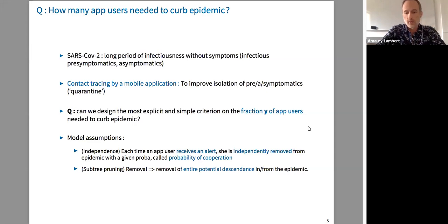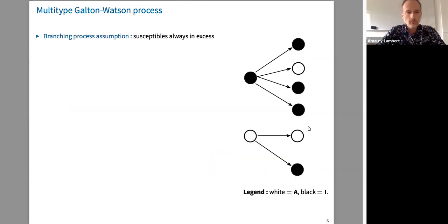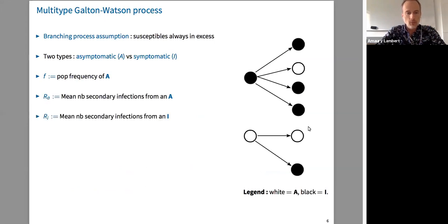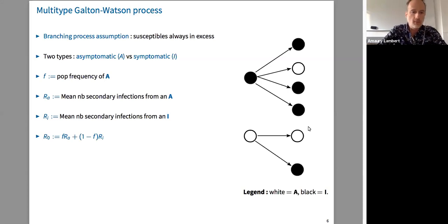The model is a two-type Galton-Watson process. We assume, as in the previous talk, that susceptibles are always in excess. We have two types: asymptomatics (A) and symptomatics (I). An important characteristic is the frequency f of asymptomatics in the population. We distinguish between a mean number of secondary infections from asymptomatics (r_A) versus symptomatics (r_I). The R0 is then f·r_A + (1-f)·r_I.